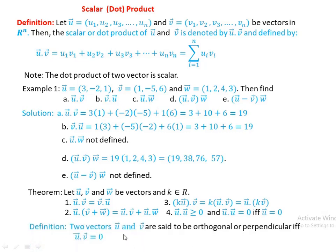Definition: Two vectors u and v are said to be orthogonal or perpendicular if and only if u·v = 0. That means if u·v equals zero, then the two vectors u and v are orthogonal.